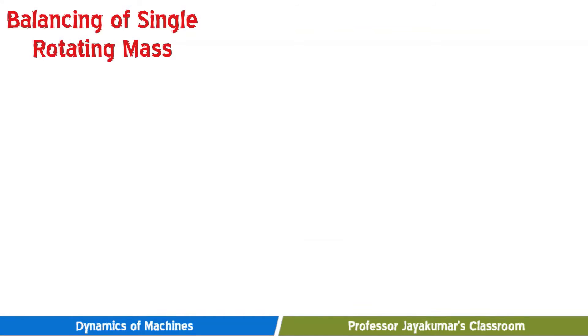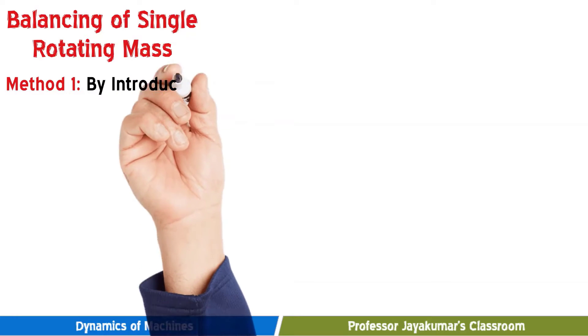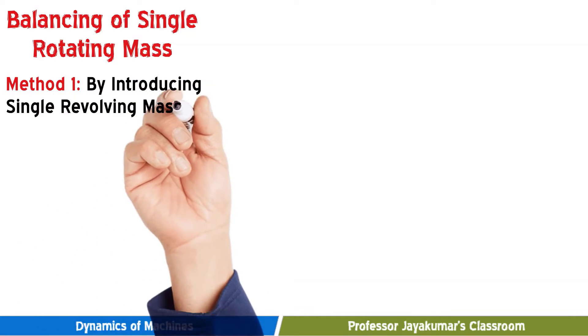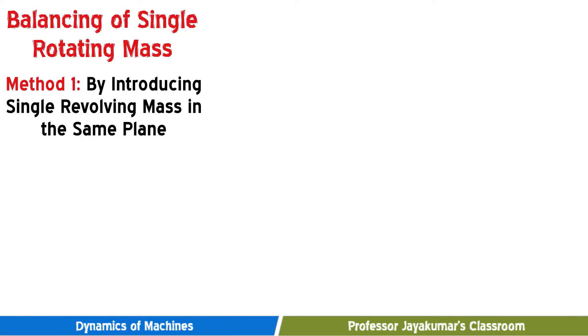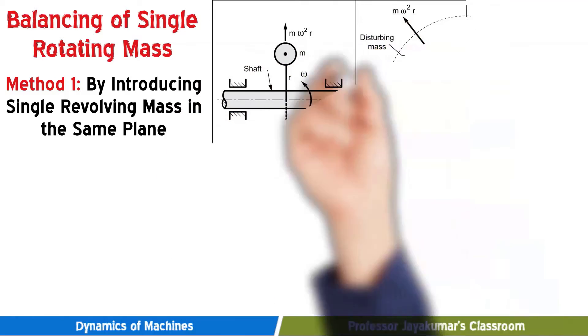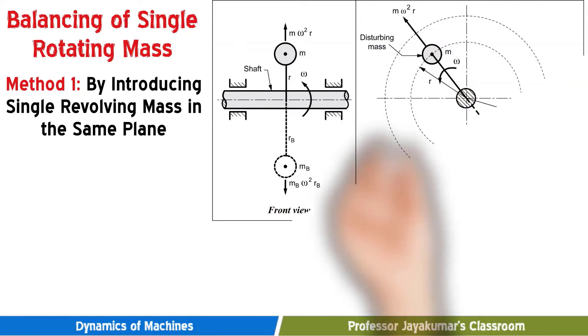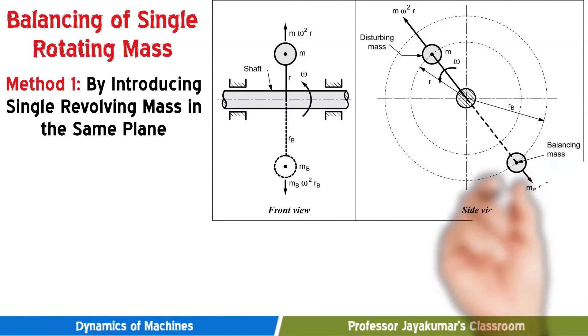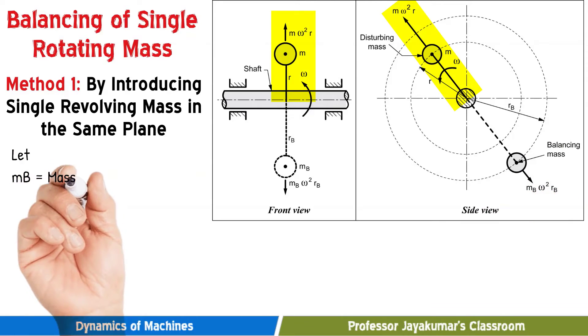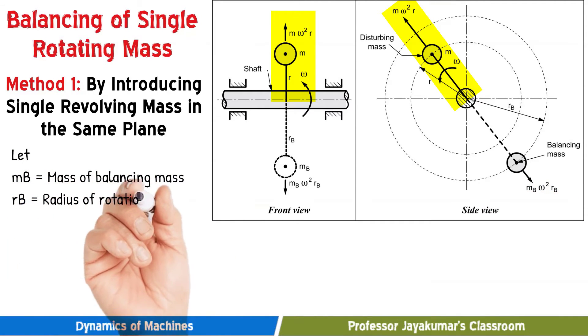Let us start with method one. We will balance single rotating mass by introducing a single revolving mass in the same plane. We already know the magnitude of unbalanced force. What is that? M omega square r. And also we know the direction of unbalanced force. What is that? It is radially outwards because it is a centrifugal force.